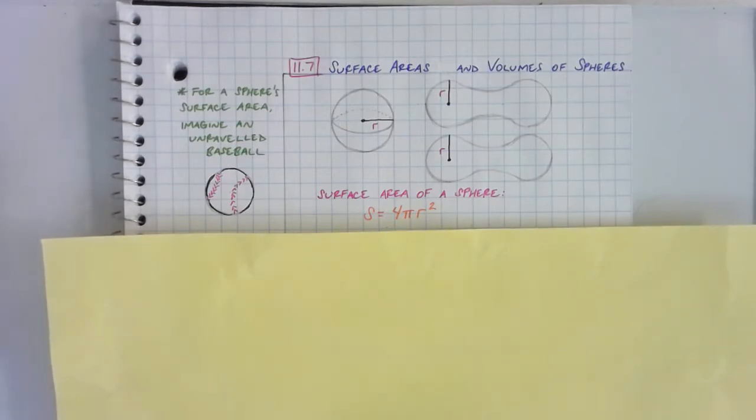All right, Chapter 11, Section 7, Surface Areas and Volumes of Spheres. This is the last section of Chapter 11, the last lecture day for Math 2 in general. So let's jump into it.